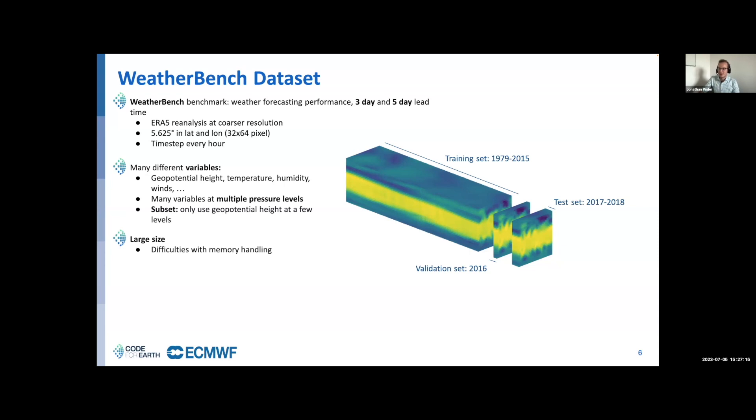We need to select a subset. In all the results I will show later, we only use geopotential height with a sub-selection of the pressure levels. As I already said, due to the large size we had some problems in the beginning but we mostly solved this now. What is compared on WeatherBench? The main metric is root mean squared error, evaluated for two variables: geopotential height at 500 hectopascal and temperature at 850 hectopascal.